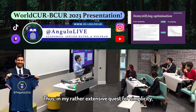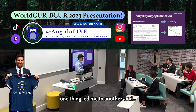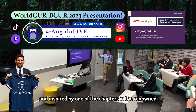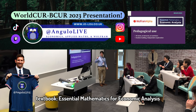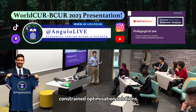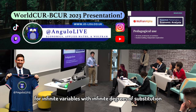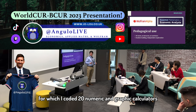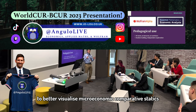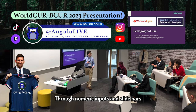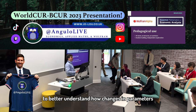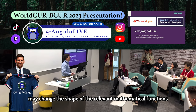Thus, in my rather sensitive quest for simplicity, one thing led me to another, and I chose to believe in the future. Over the summer, as part of my undergraduate research sports team here at the university, and inspired by one of the chapters in the renowned textbook Essential Mathematics for Economic Analysis, I algebraically derived and generalized constrained optimization solutions for infinite variables with infinite degrees of substitution, for which I coded 20 numeric and graphic calculators using Wolfram language. Through numeric inputs and slide bars, the user will be able to build their own intuition independently from class material to better understand how changes in parameters may change the shape of their relevant mathematical functions.